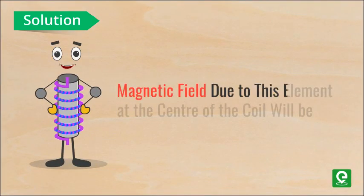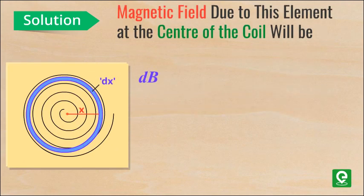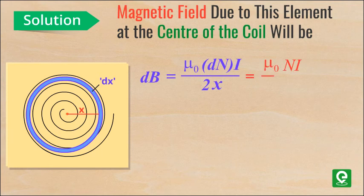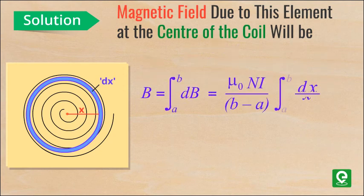Magnetic field due to the strip element at the center of the coil will be dB = μ₀(dN)I/(2x). On substituting the value of dN, this expression becomes dB = μ₀NI/(b-a) times dx/x. On integrating this expression from limit a to b...